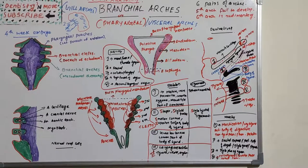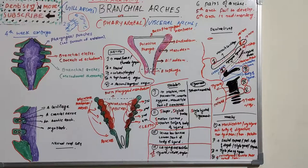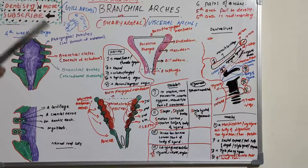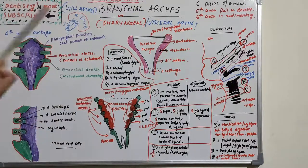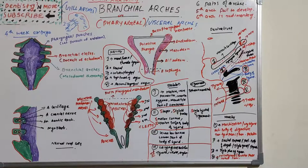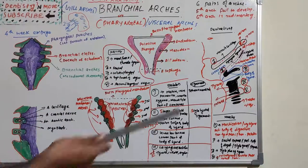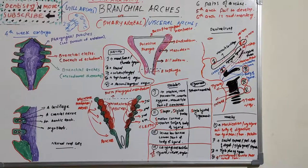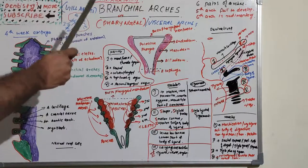Welcome back to another session in dentistry. Today's topic is pharyngeal or visceral arches, also known as branchial or gill arches. They are called branchial or gill arches because human vertebrates are similar to fish vertebrates. In exams, the question may use 'pharyngeal arch' or 'branchial arch' interchangeably. Both vertebrates have six pairs of arches, but in humans the fifth arch fails to develop and the sixth is rudimentary.